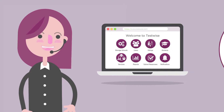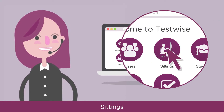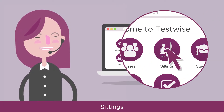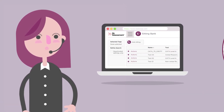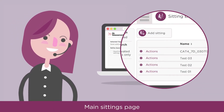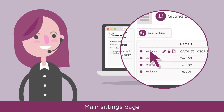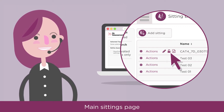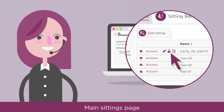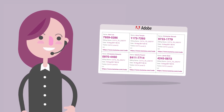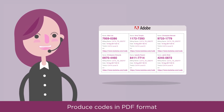To download your access codes, select the sittings icon from the main home screen. Next to the sitting you'd like to administer, click on the Actions button. You then have two formats for producing your access codes.